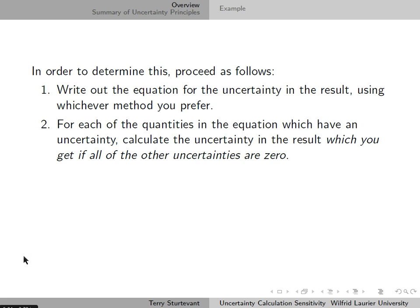For each of the quantities in the equation which have an uncertainty, calculate the uncertainty in the result which you would get if all of the other uncertainties were zero.